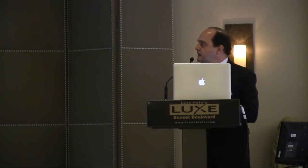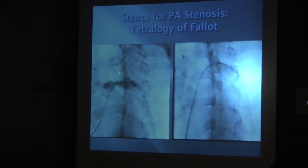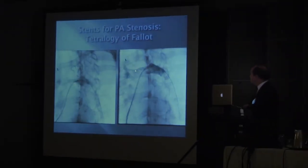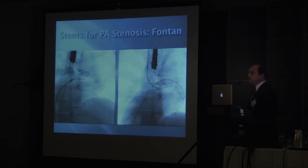Here's an example: a patient with repaired tetralogy of Fallot who has a stenosis. You can see there's a clip here, which is the site of a previous Blalock-Taussig shunt. A stent has been placed. This is something that's been done now for almost 20 years.